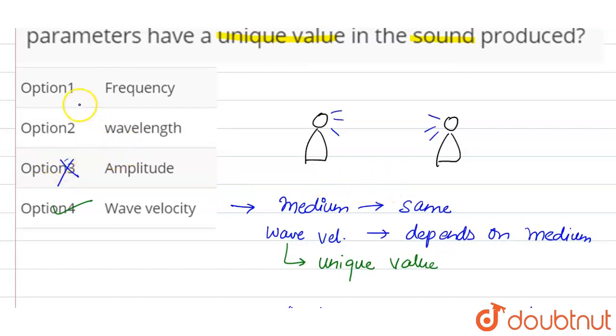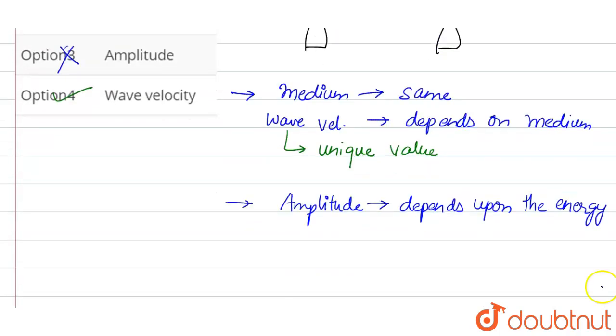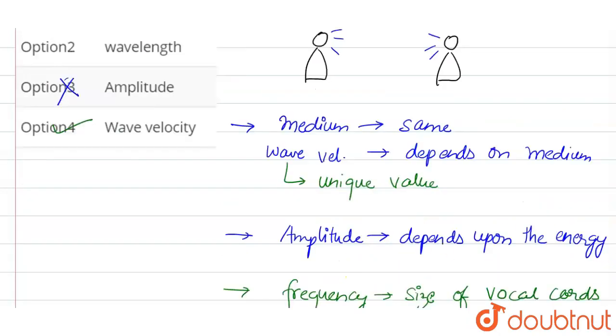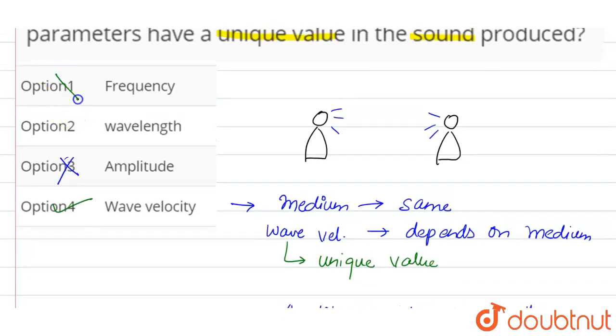Option number two and option number one are frequency and wavelength. As we know, frequency of the sound depends upon the size of vocal chords. So as the size of your vocal chord and your friend's vocal chord might differ, frequency for the sound will not be unique. So frequency is also wrong.